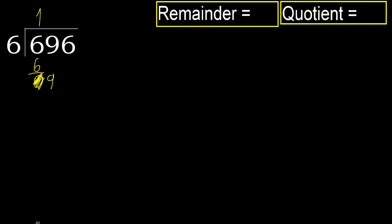Eliminate 0. Bring down 9. 6 multiplied by 2 is 12 — greater. Multiplied by 1 is 6. Subtract. Next.